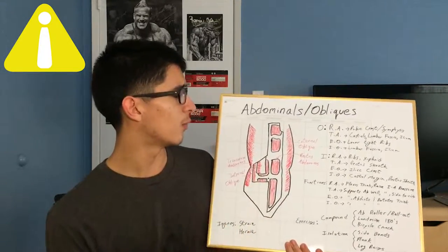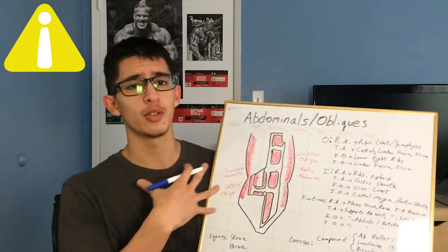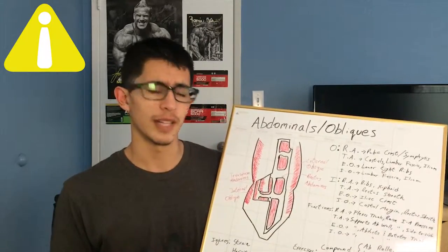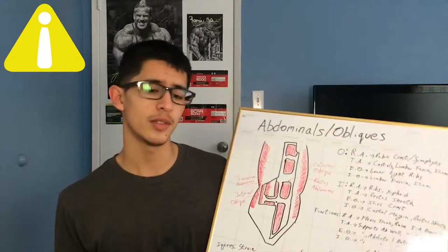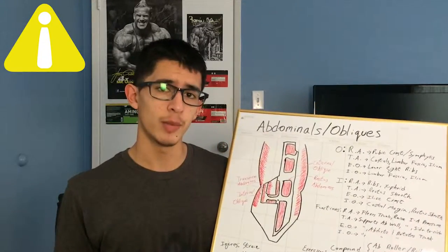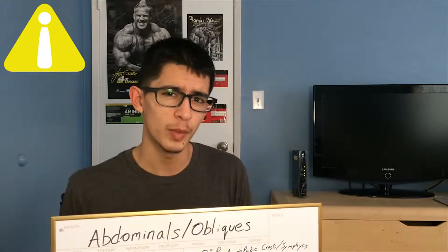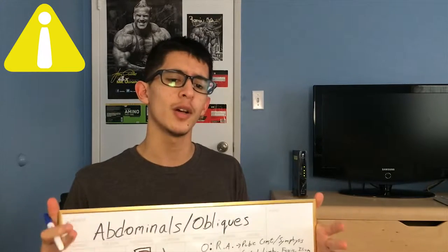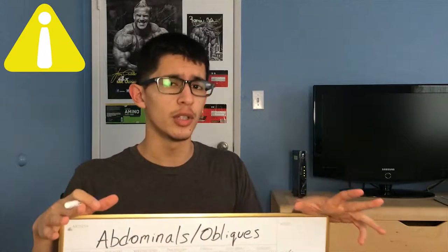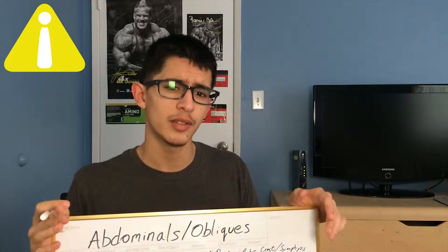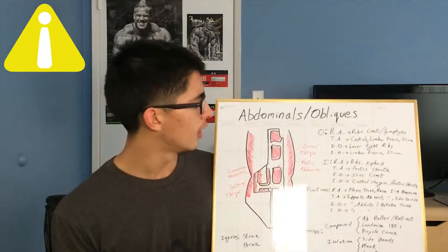For the functions of these four muscles: the rectus abdominis flexes the trunk — doing a crunching motion or bringing your torso down to your hips or knees. It also helps with raising intra-abdominal pressure. Intra-abdominal pressure is the pressure you build up in your abdominal cavity to keep your back neutral. If you're doing squats, deadlifts, or compound movements, creating abdominal pressure is really important — it helps place pressure against your abs and lower back to keep your spine neutral.